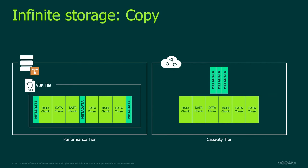For example, if your performance tier is deleted or encrypted by ransomware, we can do a restore from the capacity tier. If the performance tier is gone for any reason, we can also do a copy-back of the data to the performance tier. If the capacity tier is gone or deleted, we just copy the data again from the performance tier.